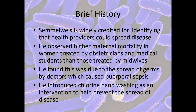The knowledge about healthcare-associated infections has been around since the mid-19th century. Semmelweis, who was a Hungarian obstetrician, is widely credited as the first person to identify that health providers themselves could spread disease. His work on maternal mortality found that women treated by obstetricians and medical students were more likely to die than those treated by midwives. He discovered this was due to the spread of germs by doctors and students, causing puerperal sepsis. He was the first to introduce an intervention — chlorine handwashing — to help prevent the spread of disease, and it actually worked.